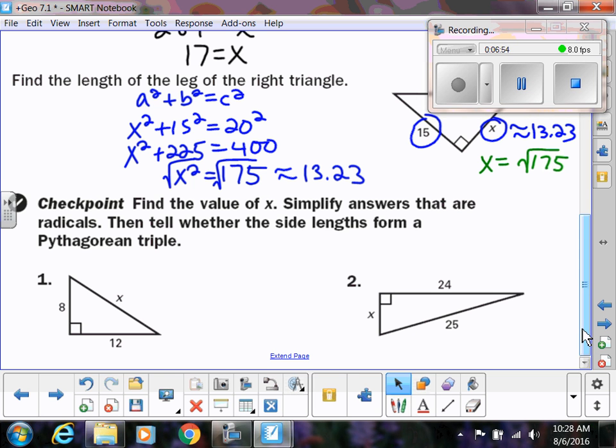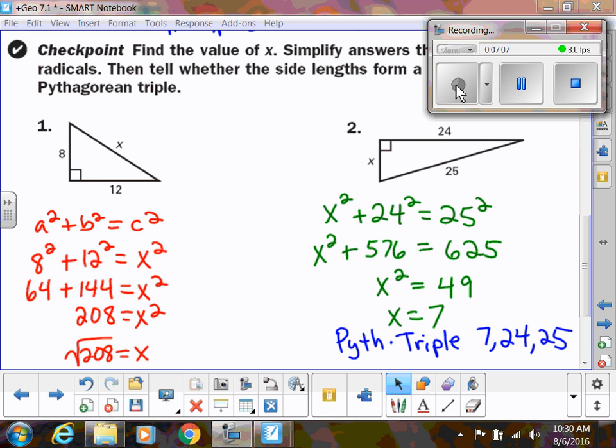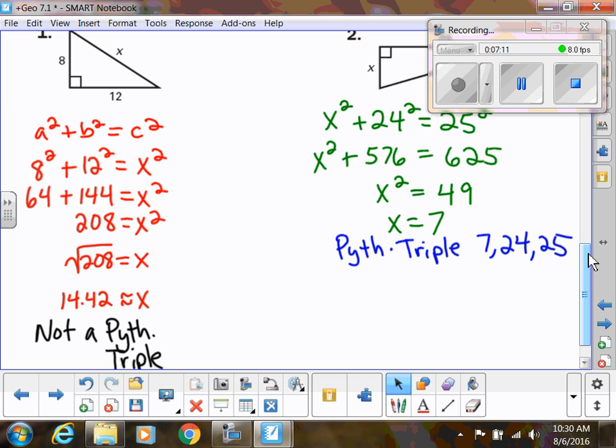So practice these on your own. So you're finding the value of x and then stating whether they are triple. So pause the video right now, do them, and then I will show you my answer. So let's look at our answers on this first example. You should have gotten the square root of 208, which is approximately 14.42. Which means that this is not a Pythagorean triple, since the square root of 208 is not a whole number.